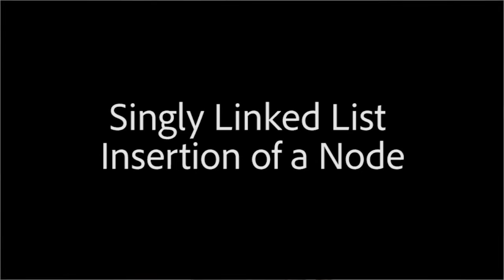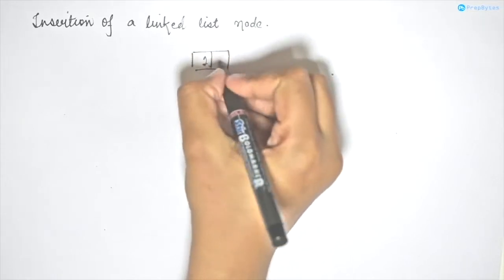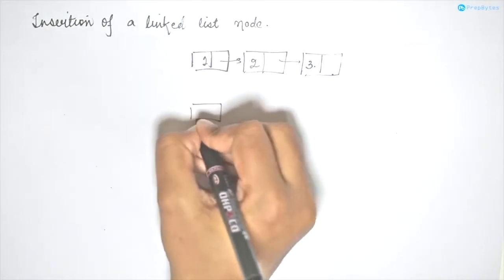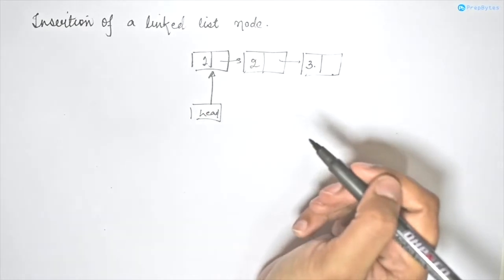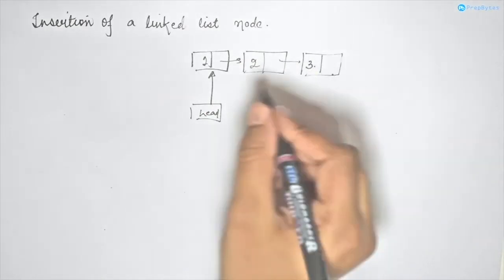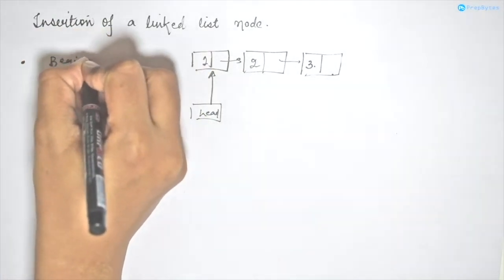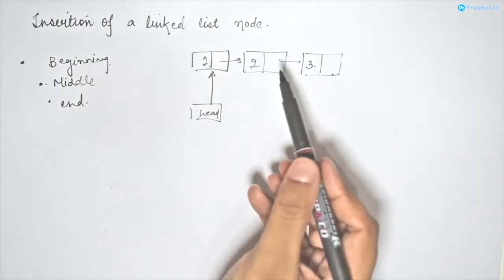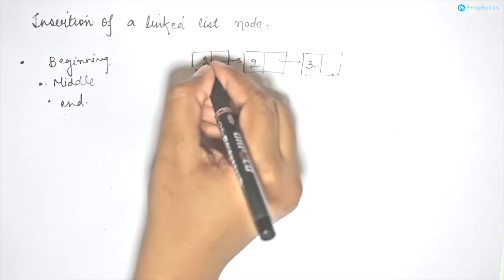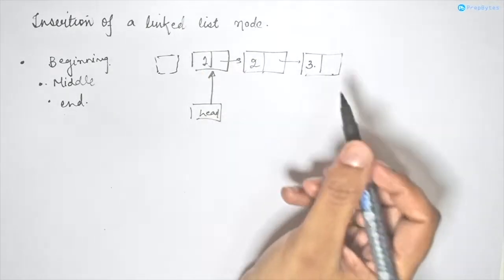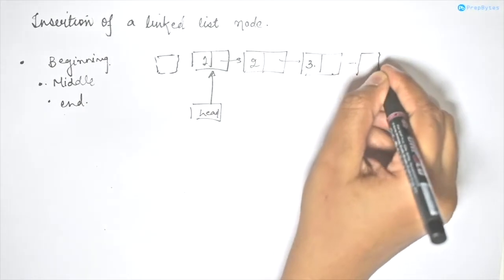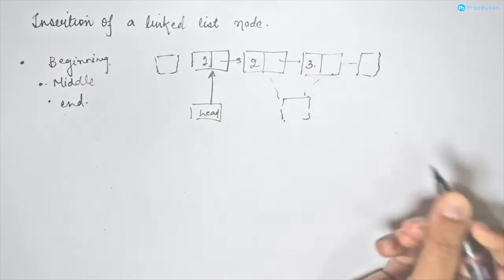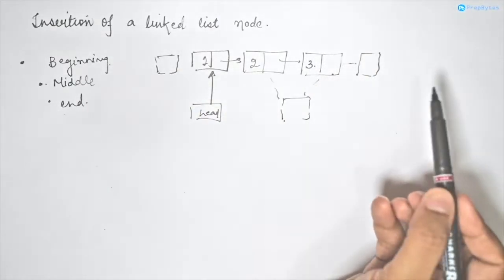Let's say I have to do an insertion of a node in a linked list. We have a head pointer pointing to the first node of the linked list. There are three conditions: I may want to insert a node at the beginning, at the middle, or at the end of the linked list. Let's see how we will go with inserting a node at each of these positions.